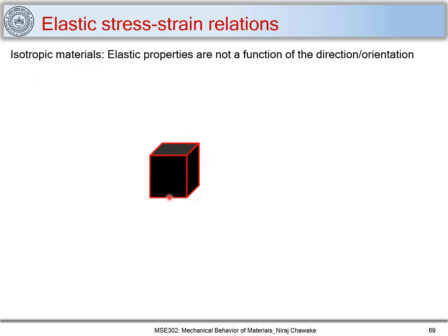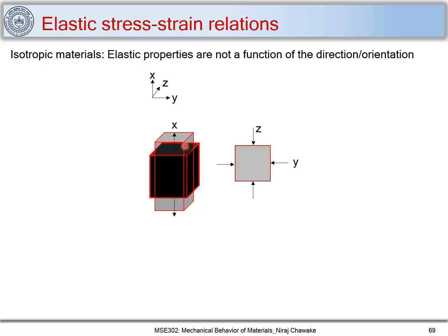Here we are looking at elastic stress-strain relations for isotropic materials. Let's take a member and first mark the coordinate axes x, y, and z. Now let's take a situation of uniaxial tension where I put a stress along the x direction. This member elongates along x direction, and if you look at its cross section — the z-y plane — I can see that there are compressive stresses acting on that plane. This is what we discussed when we looked at Poisson's ratio.